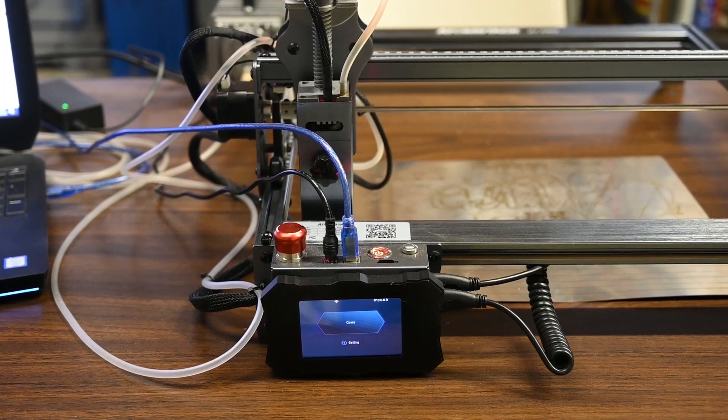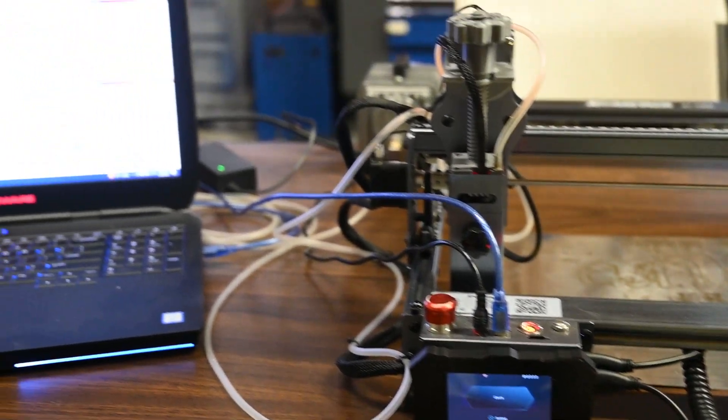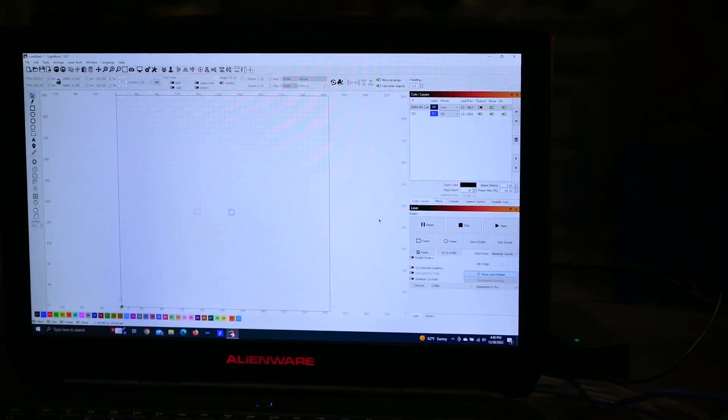For today's demonstration, we're going to be using my Atomstack X7 Pro, which is a 10 watt optical output diode laser. We'll be using Lightburn to run the files that I'm testing, just simple things, a couple of squares.